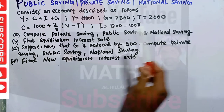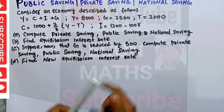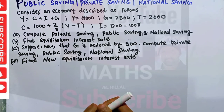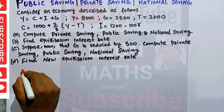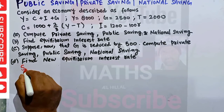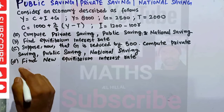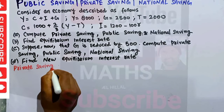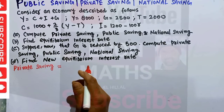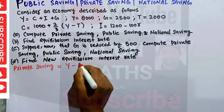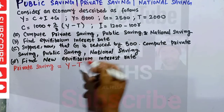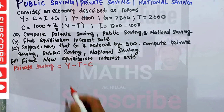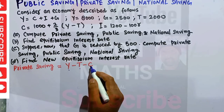To calculate private savings, public savings, and national savings, we need to know the formula for private savings. Private savings equals total income minus tax minus consumption: S_private = Y - T - C. Since income and tax are given, we first need to find consumption from the consumption function.